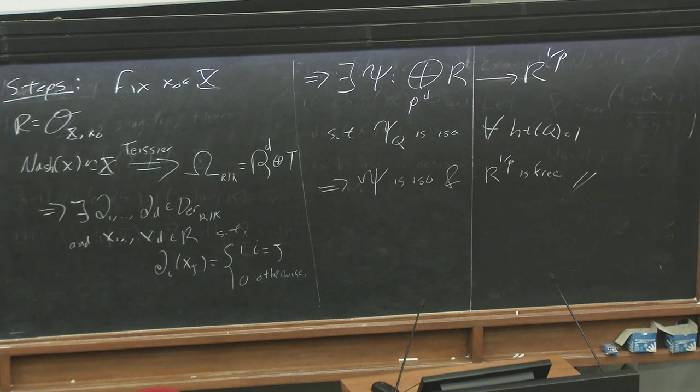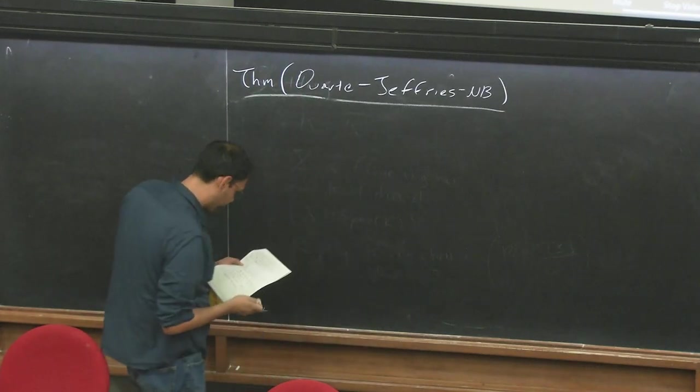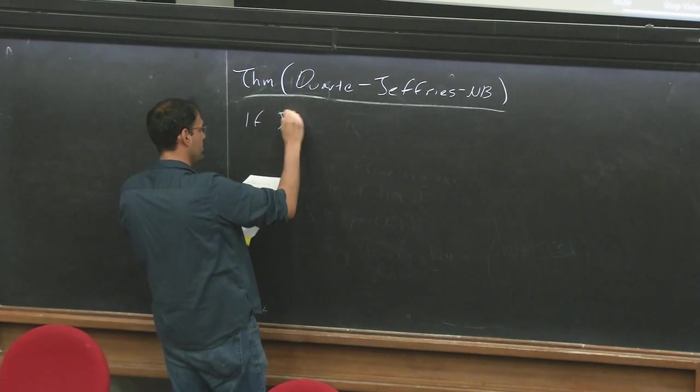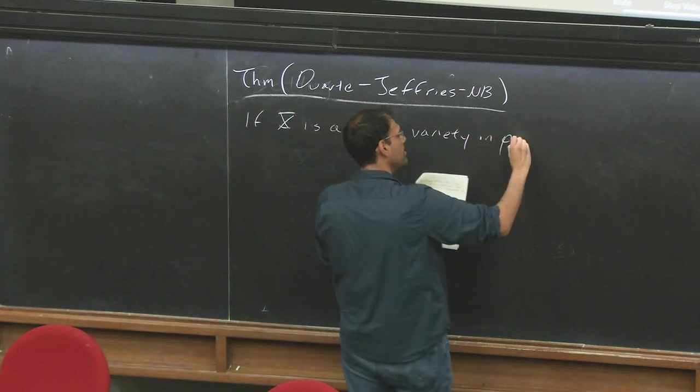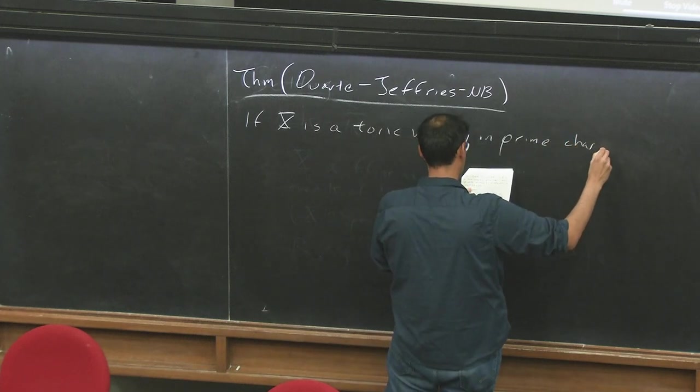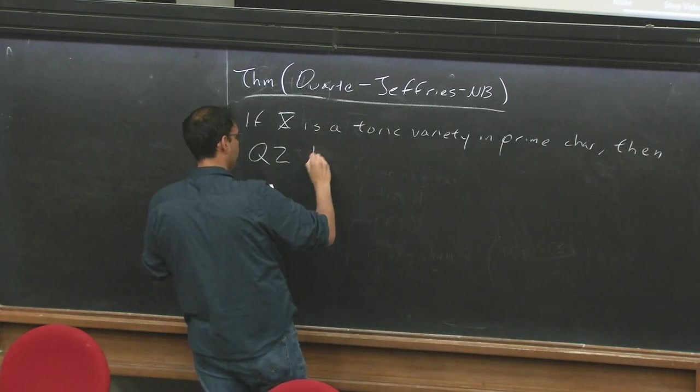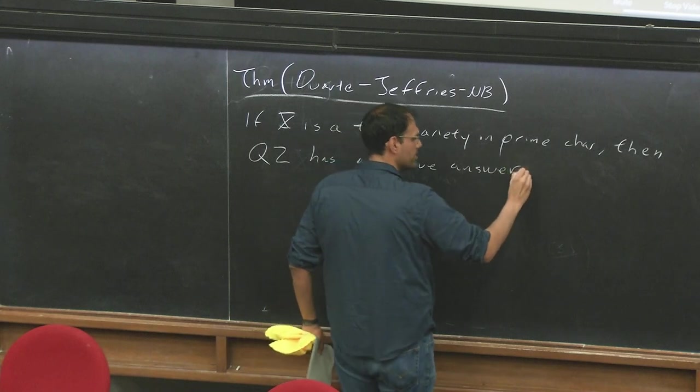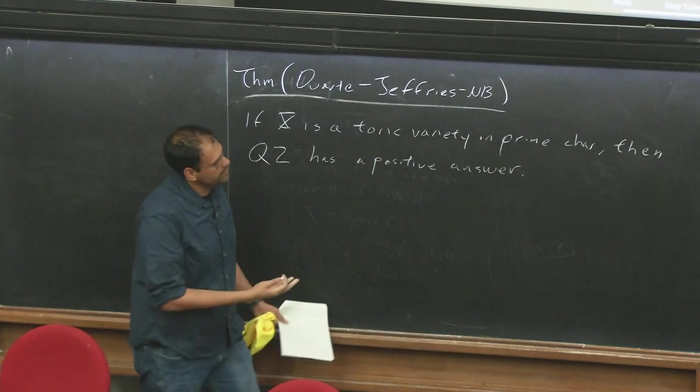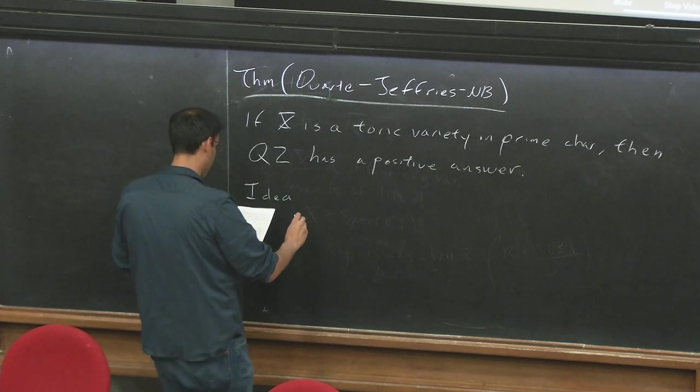And this is the new result in which Jack joined us for this project. So the theorem says the following: if x is a toric variety in prime characteristic, then question two has a positive answer. So we can resolve, same as Gonzalez-Sprinberg. Now let me say a few key ideas of the proof.